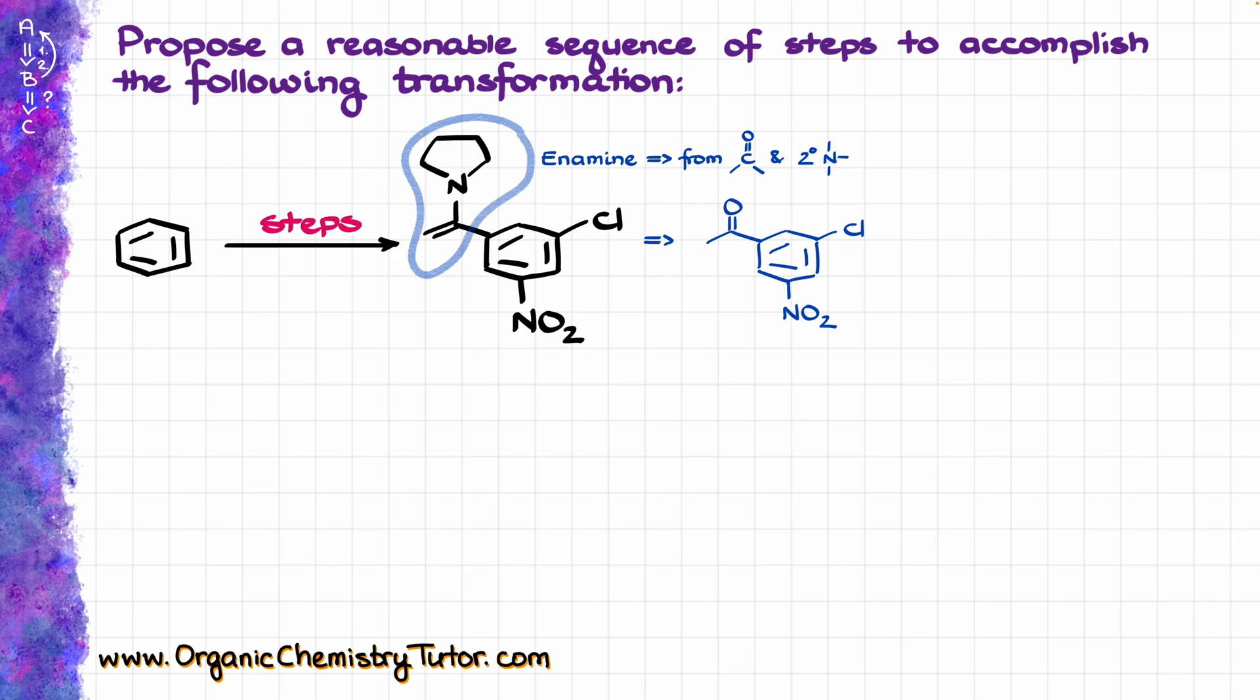Now, the next thing that I'm seeing here is that my aromatic ring has three distinct different groups. We have this chlorine over here, which we can put on via a simple halogenation reaction. We also have the nitro group on the bottom, which we can put on our aromatic ring by treating the compound with concentrated nitric and sulfuric acids.